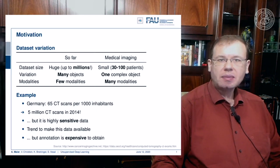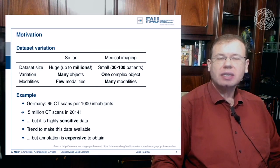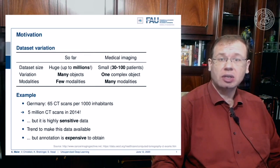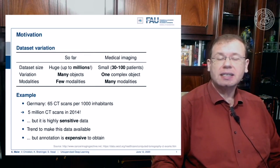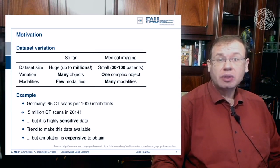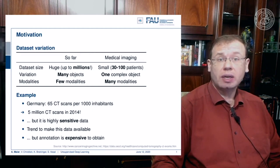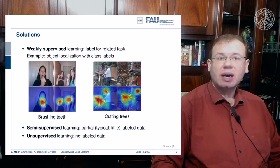So this is indeed highly sensitive data. If you share whole volumes, people may be able to identify the person, although it may be difficult from a single slice image. There are some trends to make data like this available, but still, even if you have the data you need labels — experts who look at the data and tell you what kind of disease is present, which anatomical structure is where, and so on. This is also very expensive to obtain.